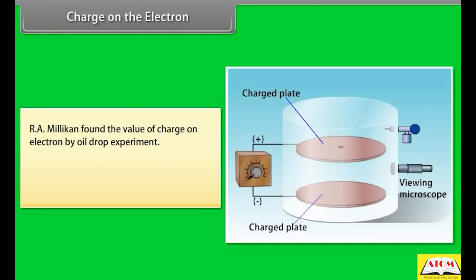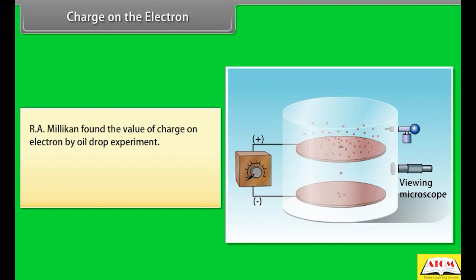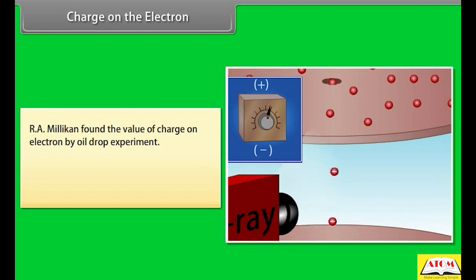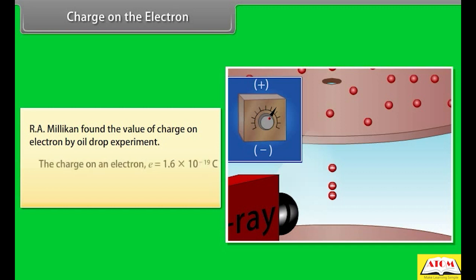Charge on the electron: Millikan found the value of charge on the electron by the oil drop experiment. The oil droplet enters the apparatus through a small hole and is allowed to fall between two charged plates. The motion of the droplet is observed with a microscope. The space between the charged plates is irradiated with X-rays, which ionize the molecules of air, and one or more electrons thus produced may be absorbed by an oil droplet.